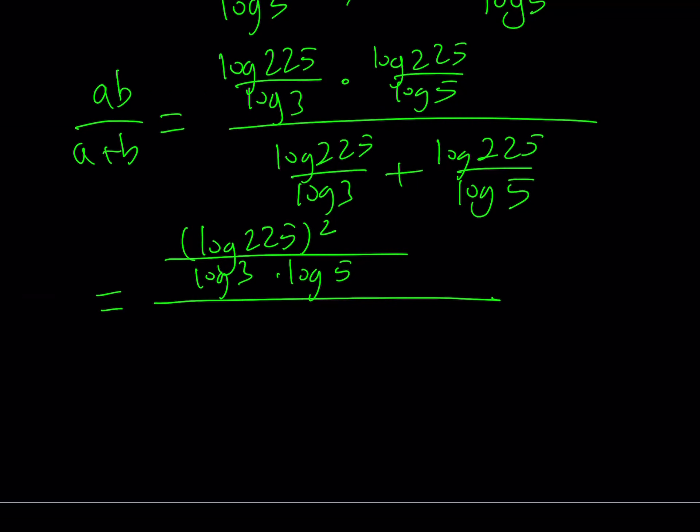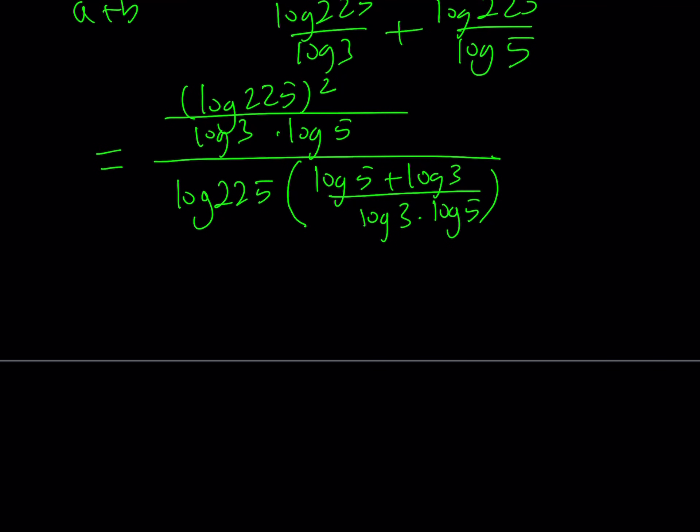The bottom one, we need a common denominator. Let's go ahead and take out log 225 as a common factor, and we get 1 over log 3 plus 1 over log 5, and then make a common denominator. We get log 5 plus log 3 divided by log 3 times log 5, which is the common denominator. So now this is like dividing two fractions, like a complex fraction.